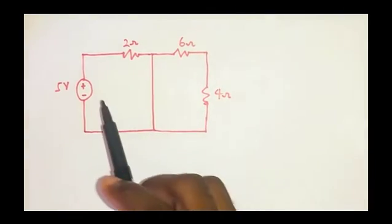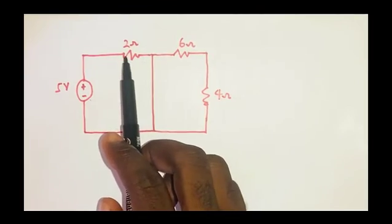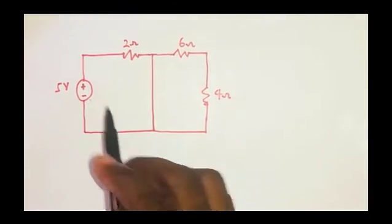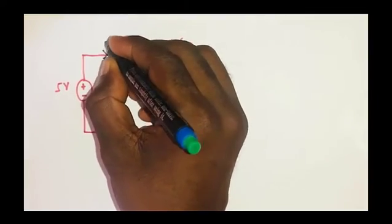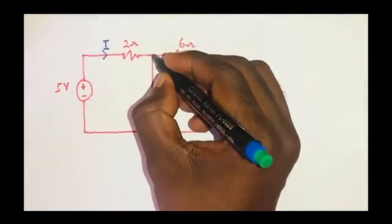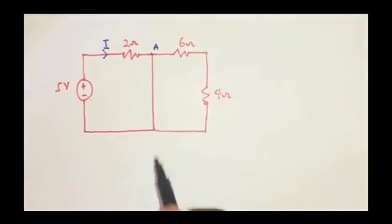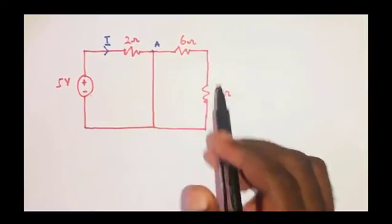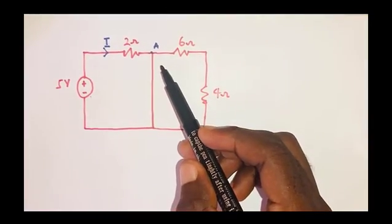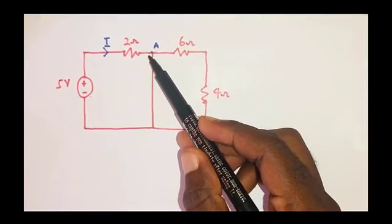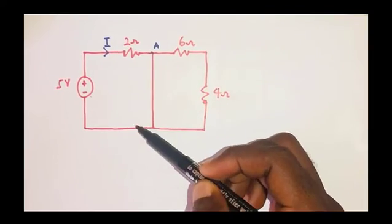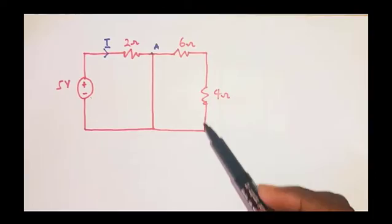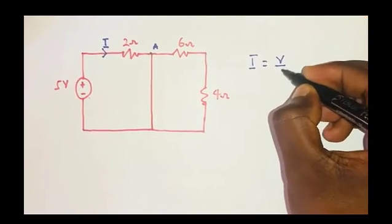In this next example we have a 5-volt voltage source and three resistors. At junction A there is a short circuit and two series resistors connected to it. The short circuit draws all the current that approaches node A through itself and back to the negative terminal, so zero current flows through the series resistors path. Using I = V/R: